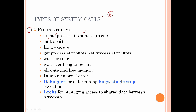The next type of system call is get process attributes and set process attributes. What is a process attribute? Like a student attribute has role number, name, and department — those are student attributes. For a process attribute, there is the process number and memory share. You can get or set those process attributes.